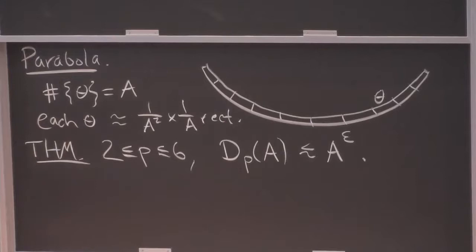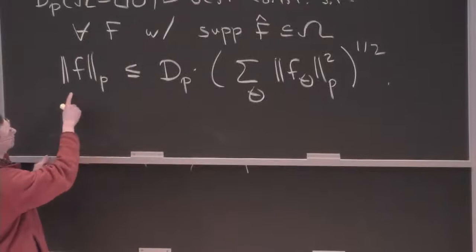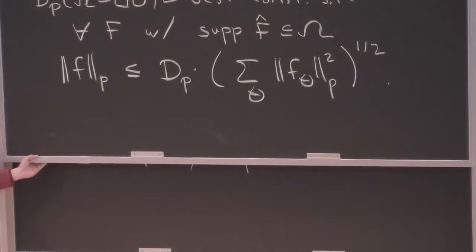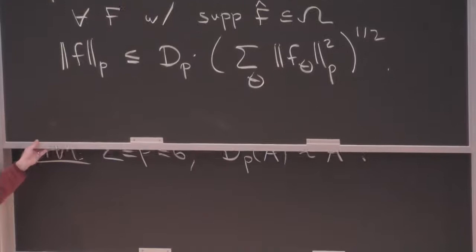At the end of last time, we were starting to talk about how the key ingredient in the proof is to look at the problem at many different scales. In fact, the whole statement of the decoupling inequality is especially designed to be able to look at the problem at many different scales. I want to explain that now more fully.